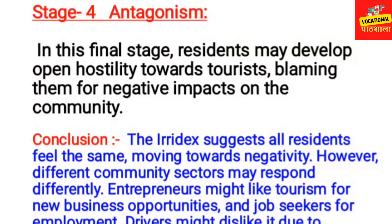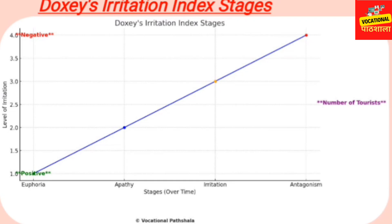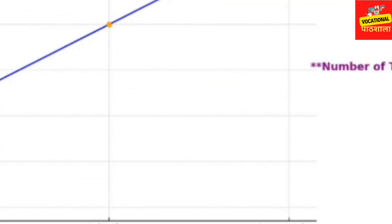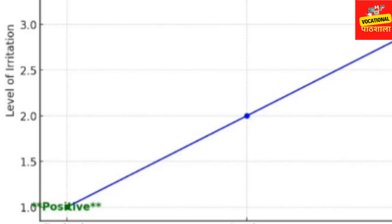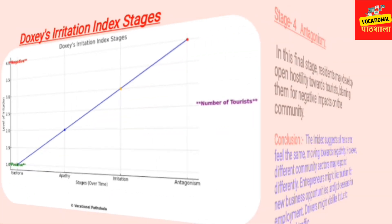Stage 4 is Antagonism. In this final stage, residents may develop hostility toward tourists, blaming them for the negative impact on the community — even fighting with tourists physically or through agitations. As you can see on the chart, the number of tourists has increased significantly, and the irritation level has reached 4.0 — the most negative point, from initial Euphoria to Antagonism.